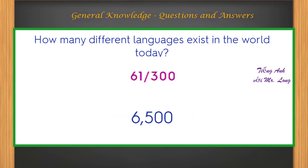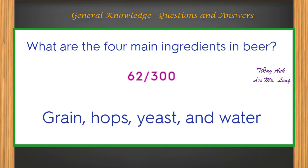How many different languages exist in the world today? Six thousand five hundred. What are the four main ingredients in beer? Grain, hops, yeast, and water.